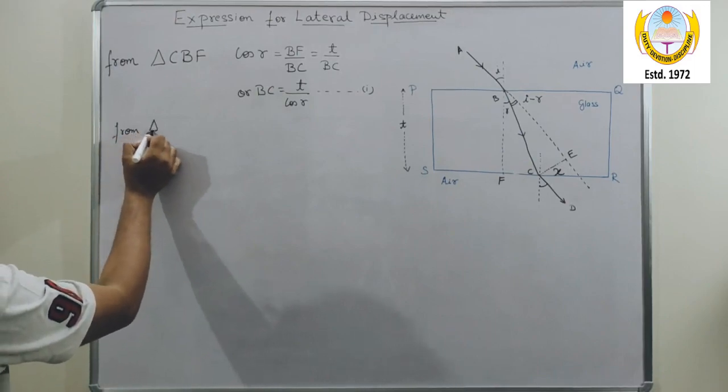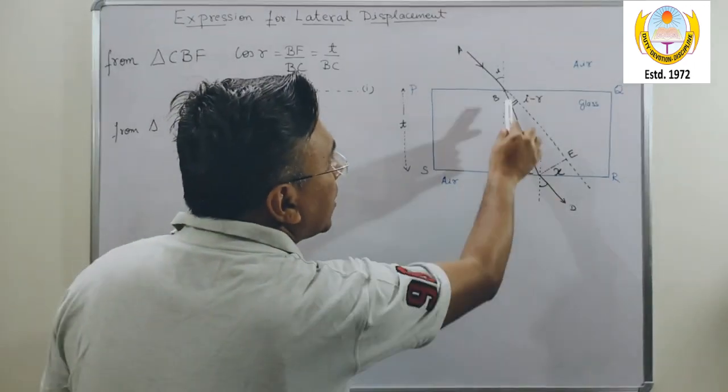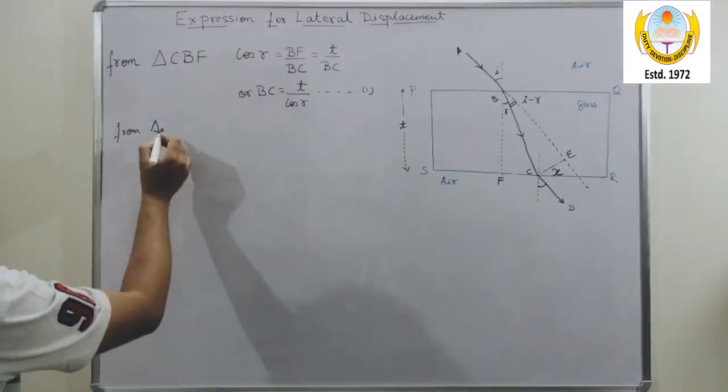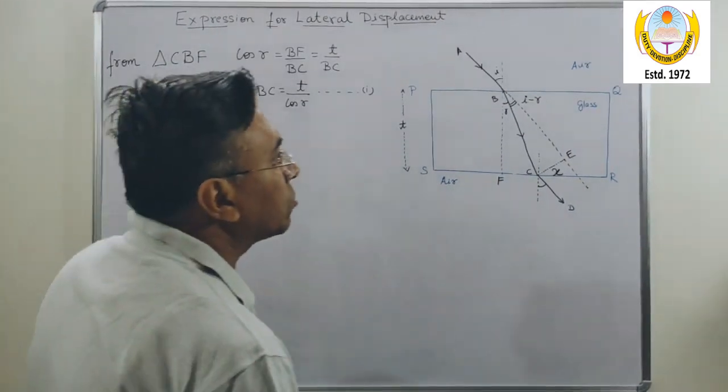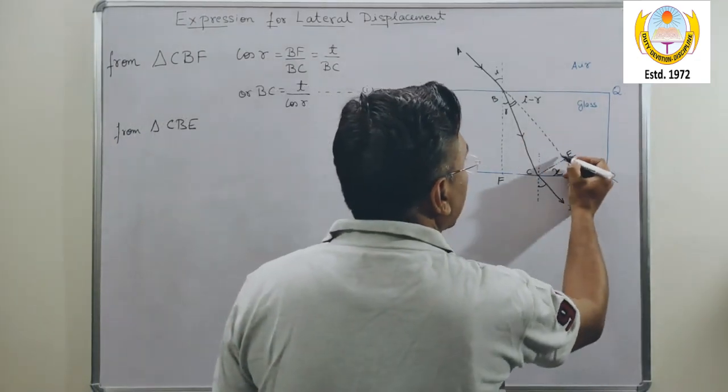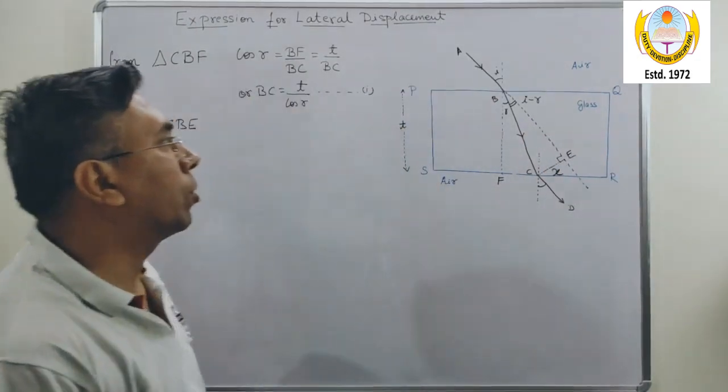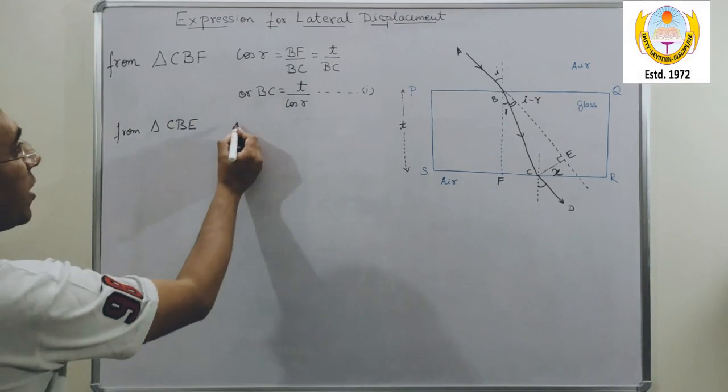Similarly, from triangle CBE, which is also a right angle triangle with this angle at 90 degrees, if I write sine of I minus R,